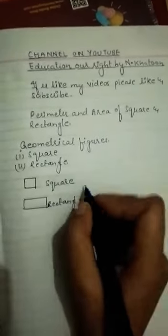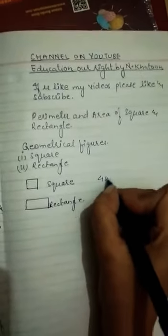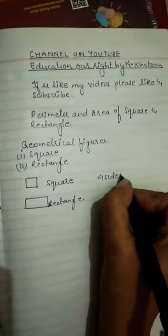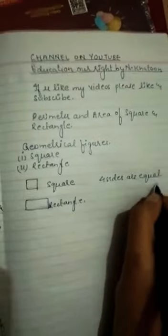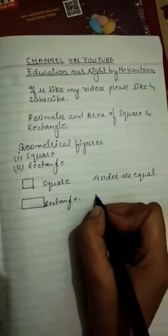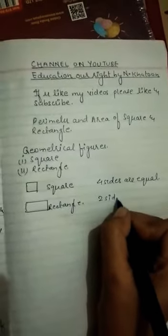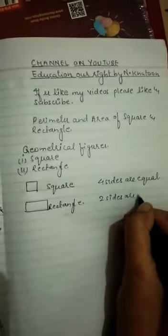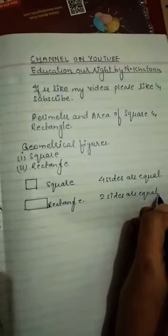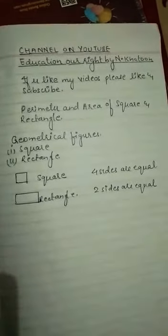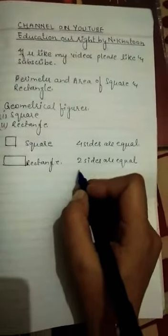In a square, all four sides are equal. In a rectangle, two pairs of sides are equal — the opposite sides are equal to each other.